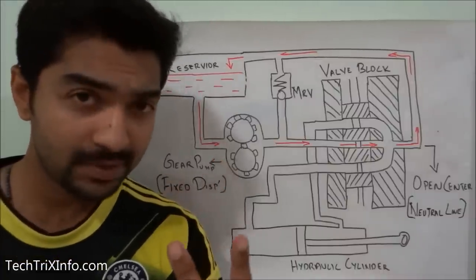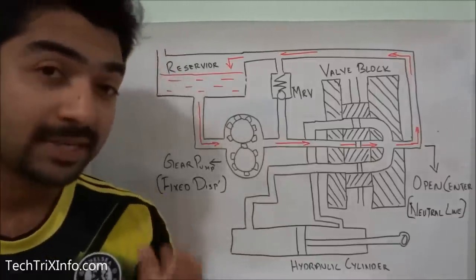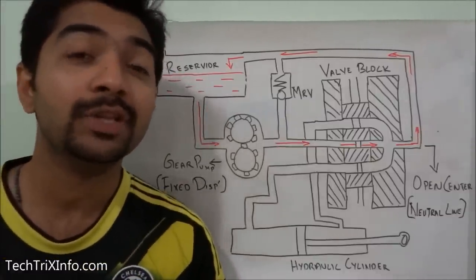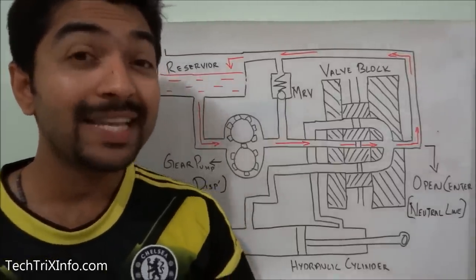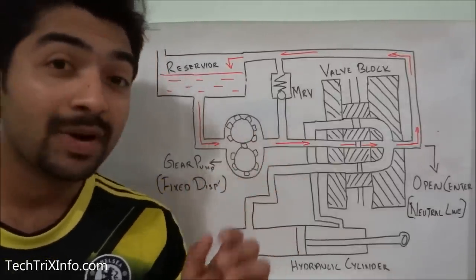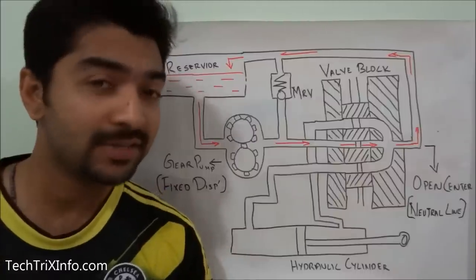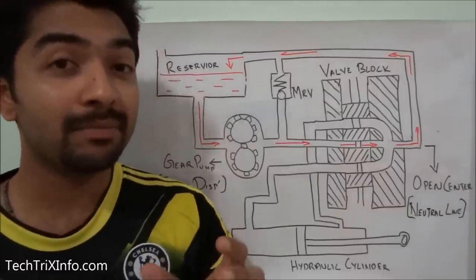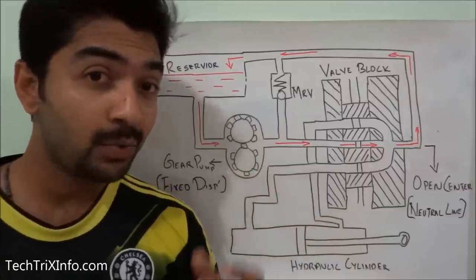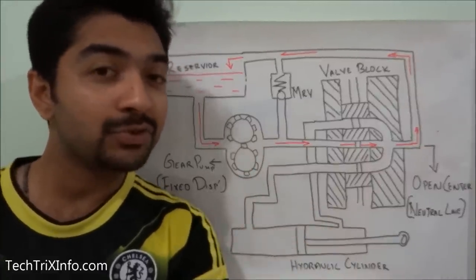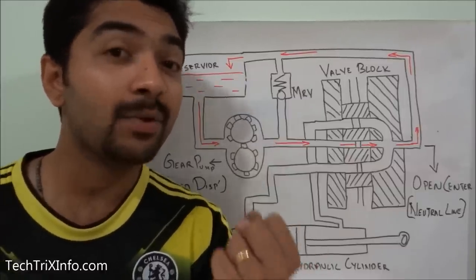Hydraulic circuits are of two types: one is closed-centered hydraulic circuit and the other is open-centered hydraulic circuit. In a hydraulic system, the path taken by the hydraulic fluid is called the hydraulic circuit. For work to happen in a hydraulic system, a flow should be created by the hydraulic pump, channeled through the control valve towards the actuator or motor, and the flow should return back towards the reservoir.